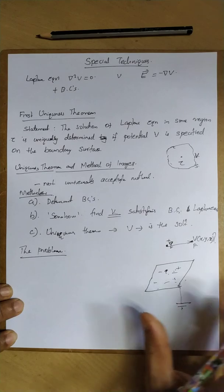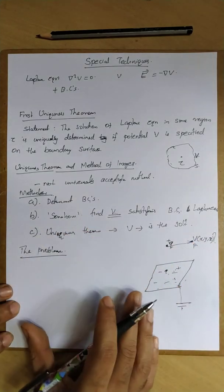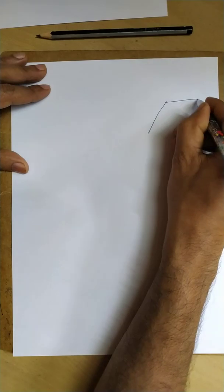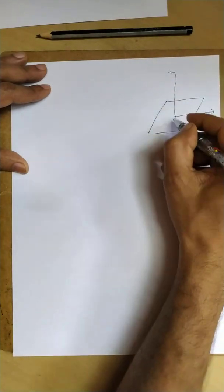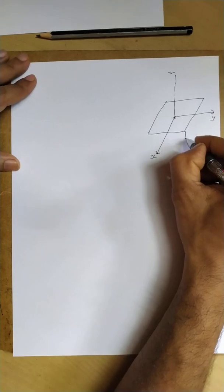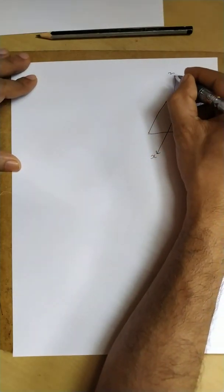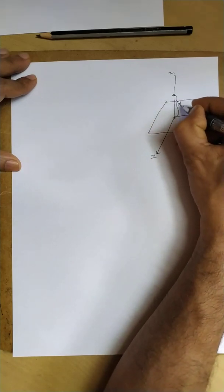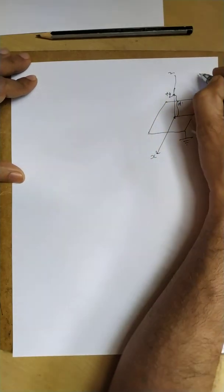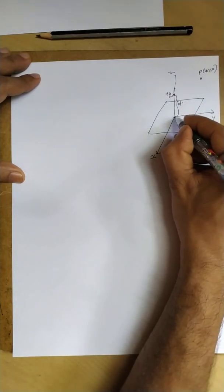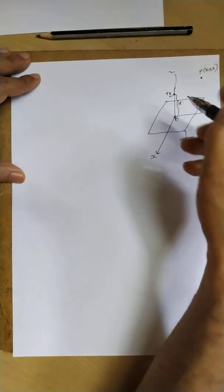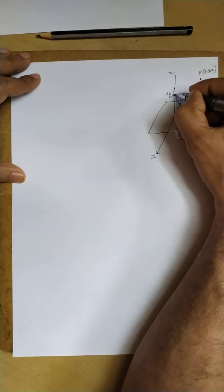We have the conducting plate — let this be the y-axis, z and x axes — the plate is grounded and conducting. At a distance d from the plate, we have placed a charge plus q. The question is: what is the potential at some point P with coordinates (x, y, z)? This is the origin; the xy-plane is the conducting plate. This distance is d, here we have plus q, and let this distance be r1.